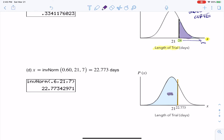So whenever I give you a percentile, you want to use inverse norm. And when we put in the mean and standard deviation, we get that the 60th percentile was about 22.773 days.